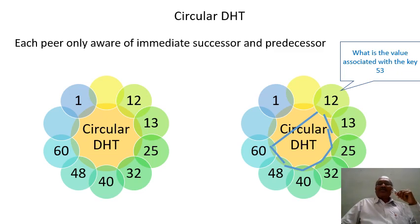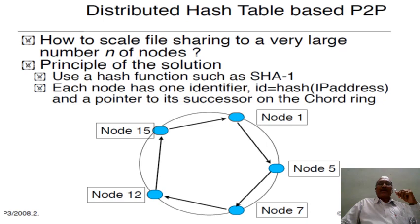If millions of devices are connected in a peer-to-peer network and you want to search for a particular value across them, the number of messages passed will be enormous — on the order of O(n). The big disadvantage of circular DHT is that with n devices, O(n) messages must be passed across the peer-to-peer network to find the requested key.